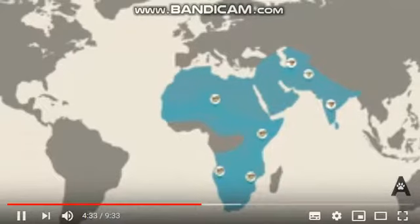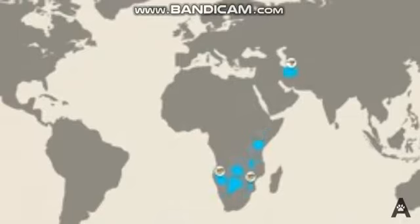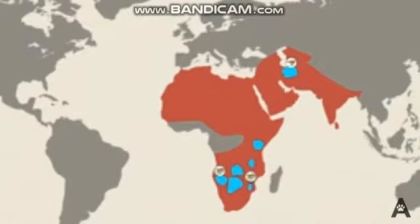It used to be found across Africa, the Middle East, Central Asia, and India, but today they can only be found in southern and eastern Africa, and there remains a small, critically endangered population in Iran. Their current range is an estimated 89% smaller than their historic range.